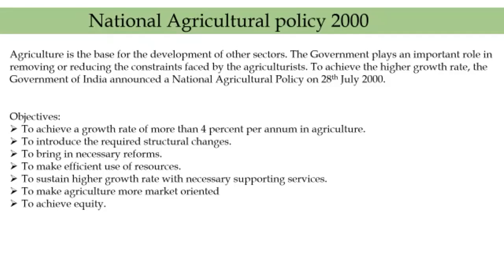The above objectives would be achieved with the help of measures like agricultural research, human resource development, post-harvest management, and marketing. So all these are the objectives of National Agricultural Policy 2000, which was announced on 28 July 2000.